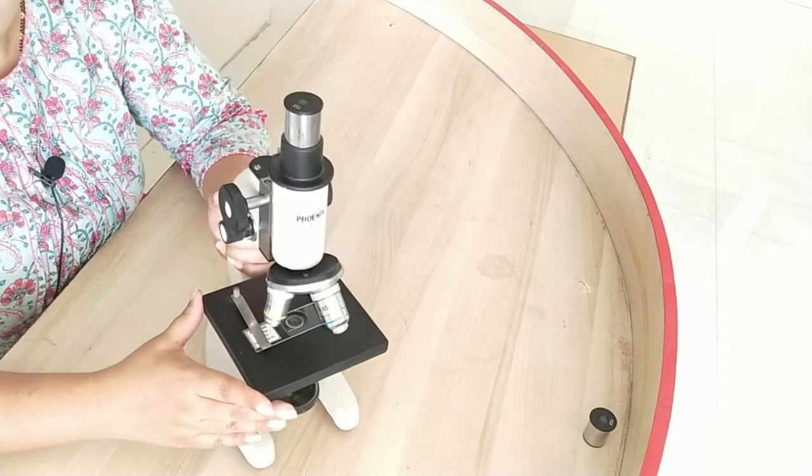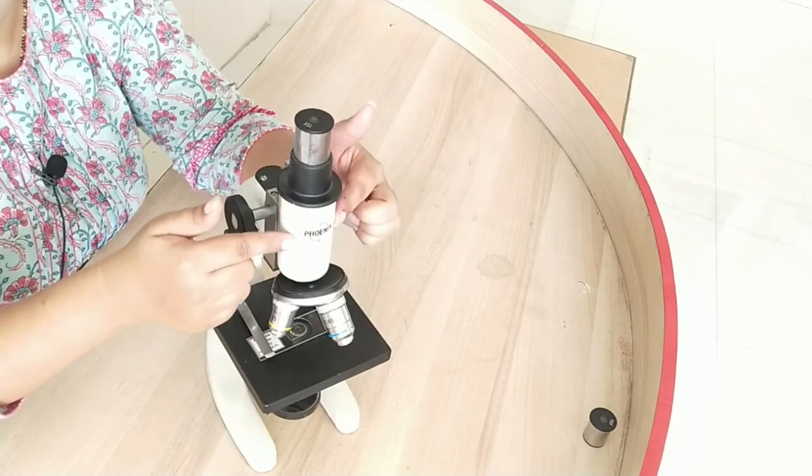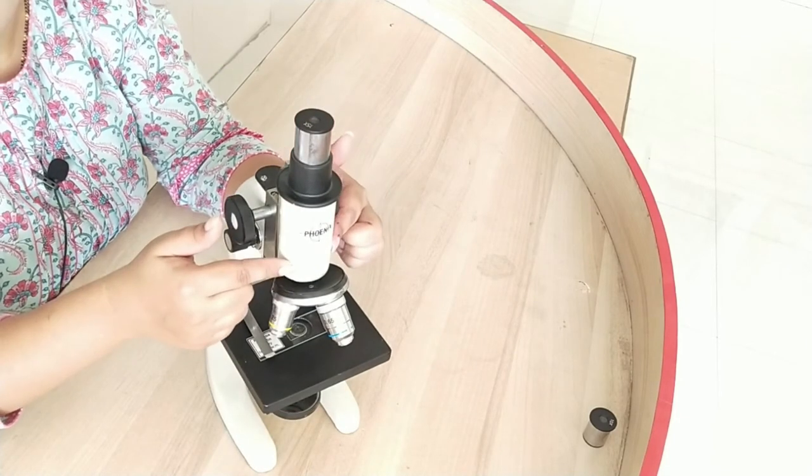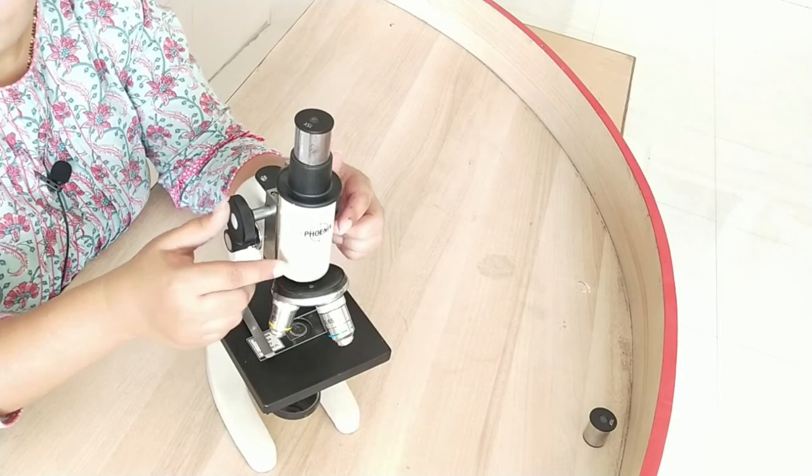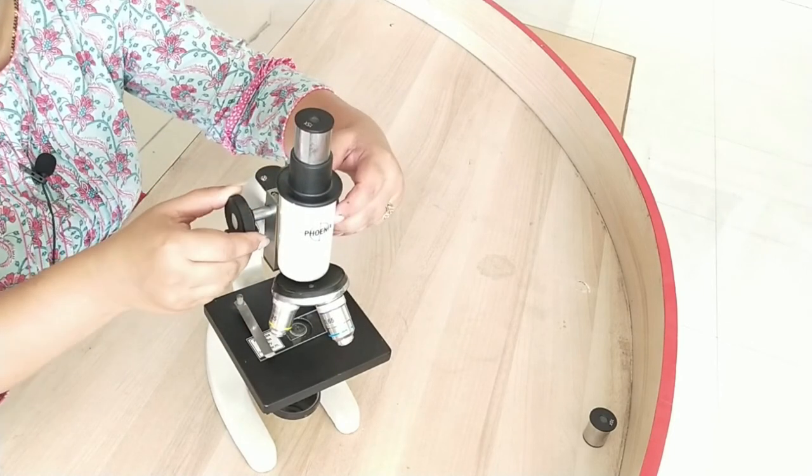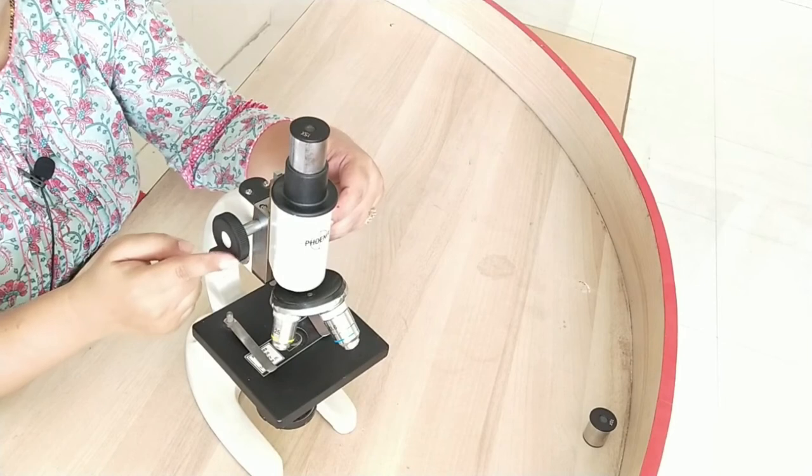Then this structure is called the body tube. It is a hollow tube and can be shifted up and down by using the adjustment knob.